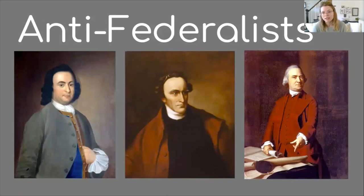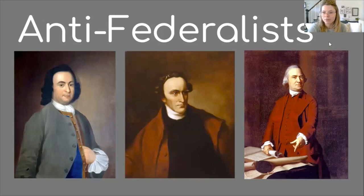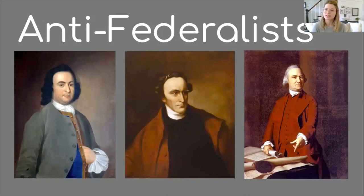The anti-federalists were people like George Mason, Patrick Henry, and Samuel Adams. They were really scared that if the federal government had too much power, it would kind of turn into the king's situation. So they really wanted the states to have all the power, and they went back and forth with the federalists on this.